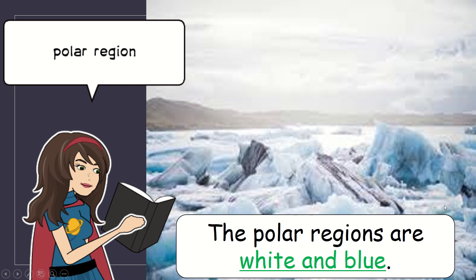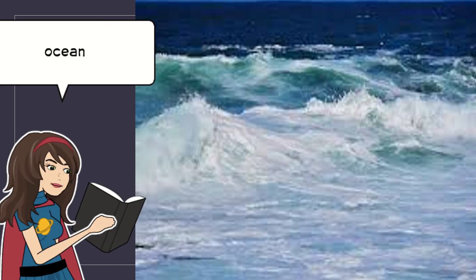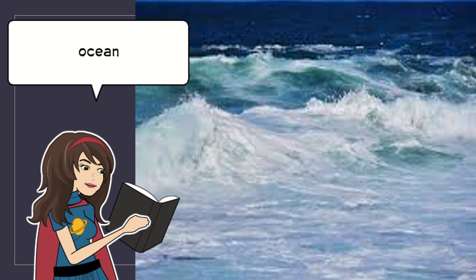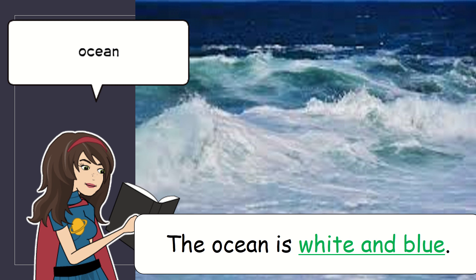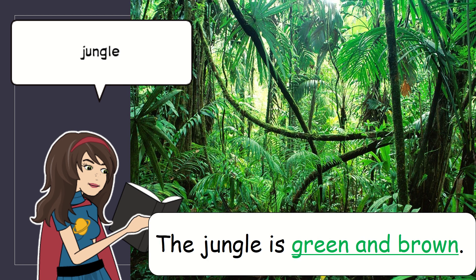Polar region. The polar regions are white and blue. Ocean. The ocean is white and blue. Jungle. The jungle is green and brown.